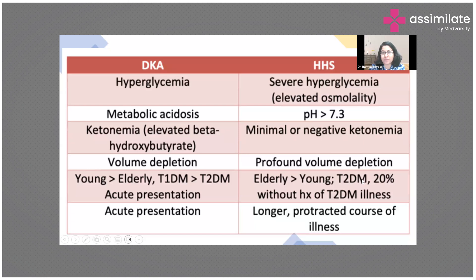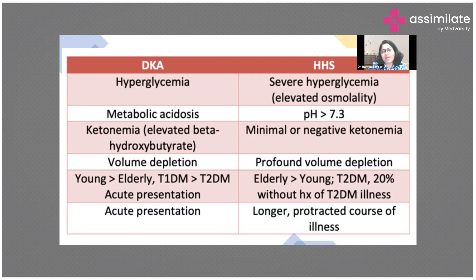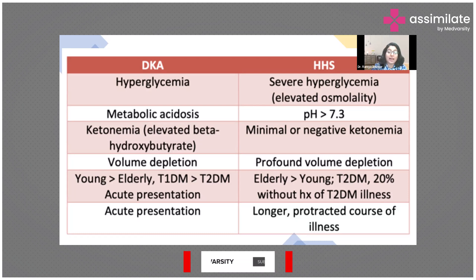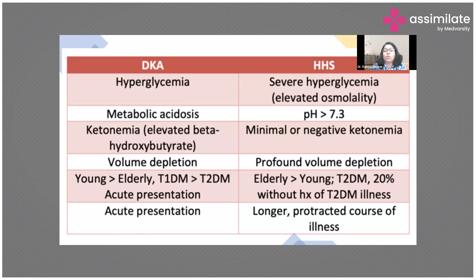Both DKA and HHS present with hyperglycemia, but in HHS the sugar is very high — more than 800 or 1000. DKA is associated with acidosis, whereas in HHS the pH will be higher than 7.3. Ketonemia is present in DKA; HHS can have mild ketones or none. Dehydration occurs in both, but is much more profound in HHS. DKA can affect any age group but is mostly seen in younger patients since it's more common in type 1 diabetes.